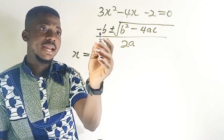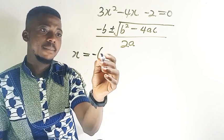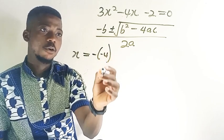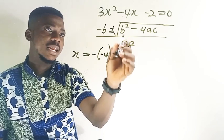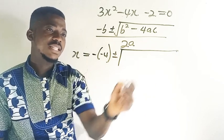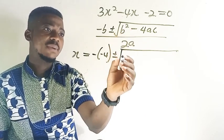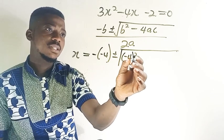So minus b that is minus negative 4, so we're going to have minus times minus 4, plus or minus. Then let's come to the roots. So in the roots, this is what we have. We have b squared now b is minus 4, so minus 4 squared.